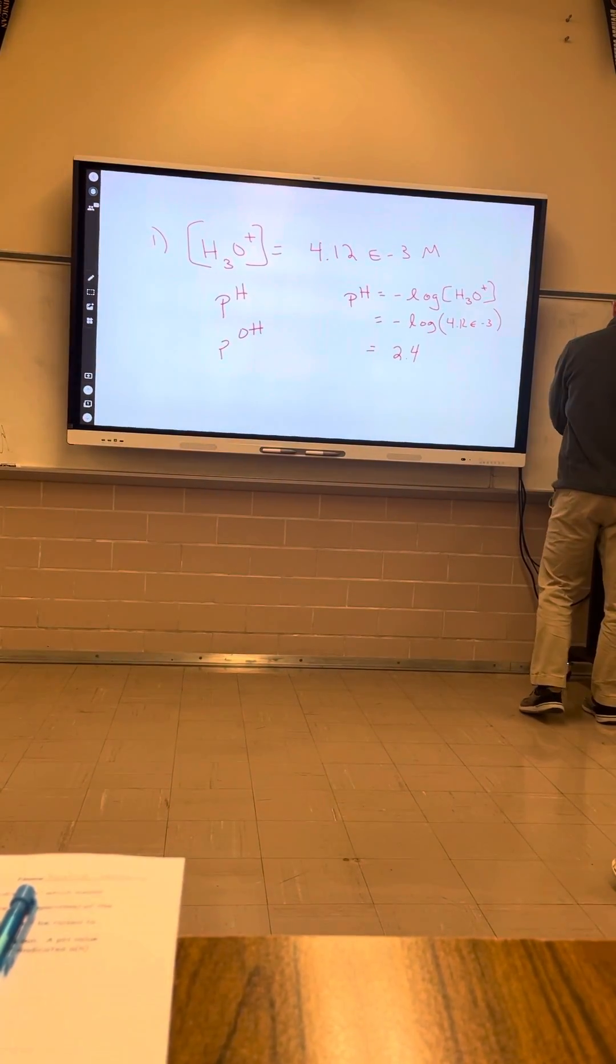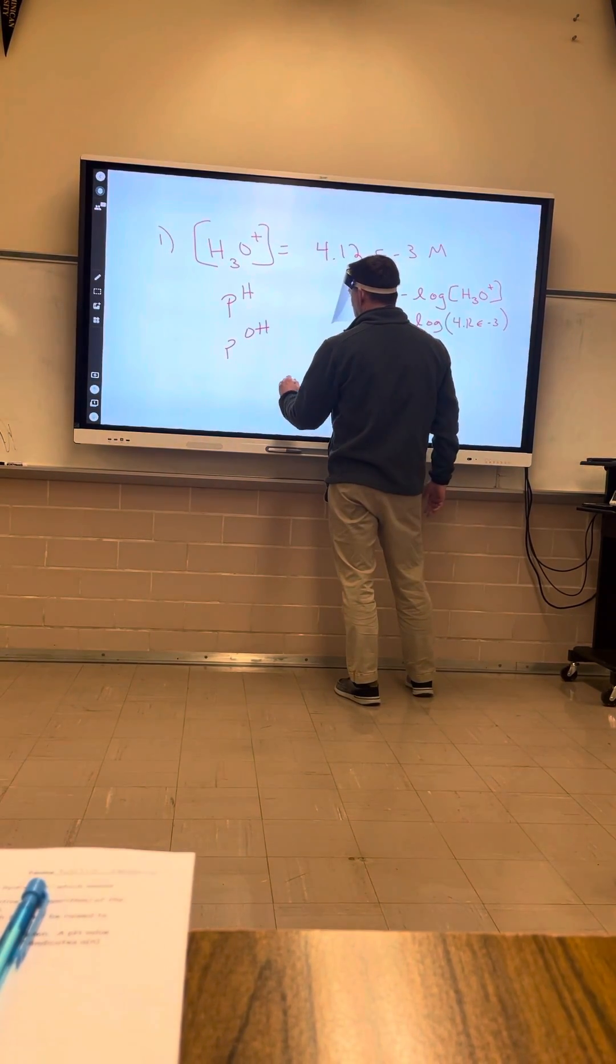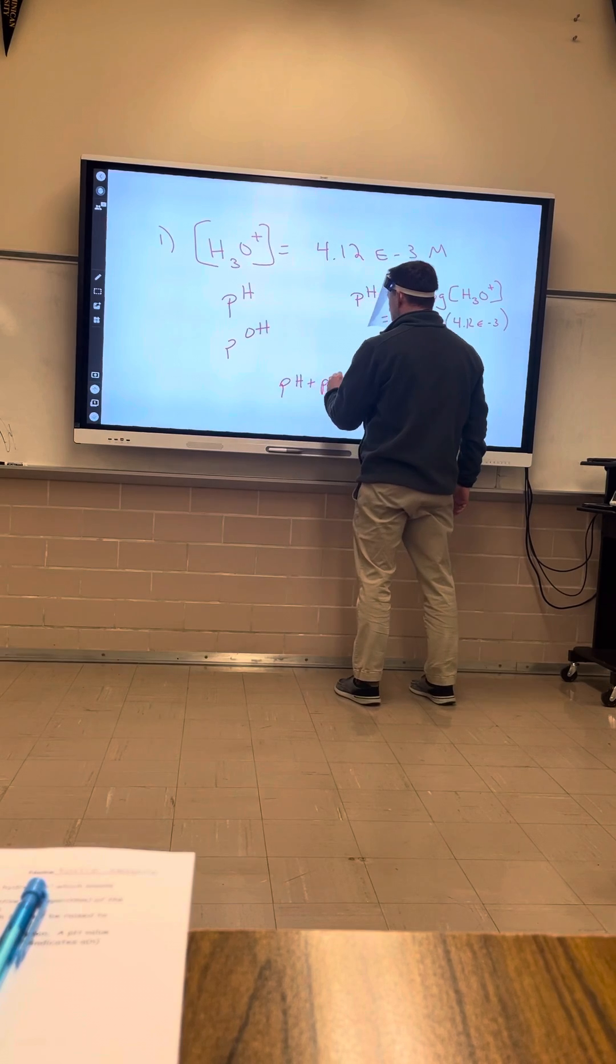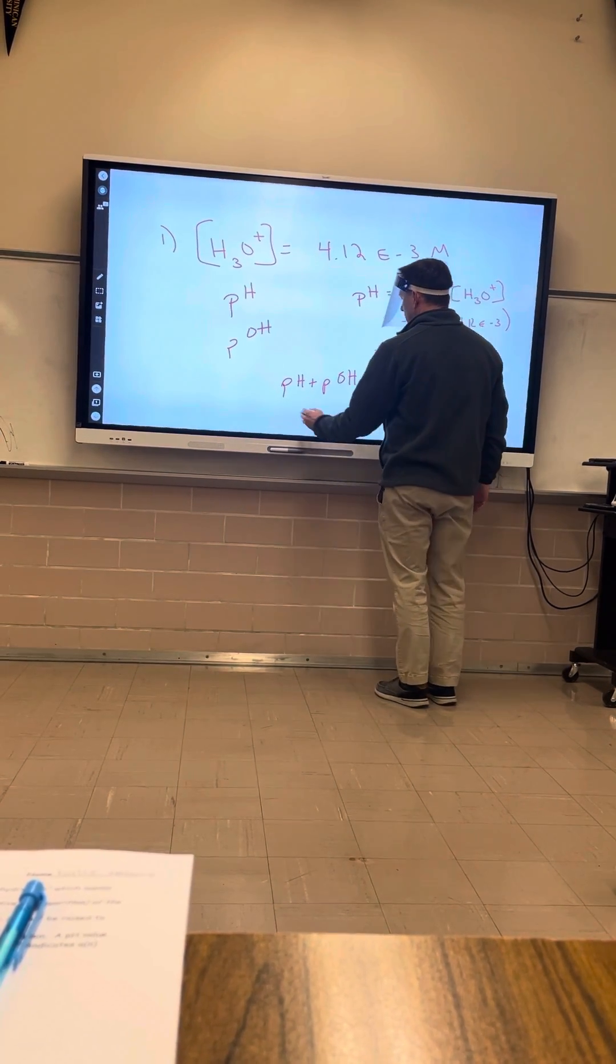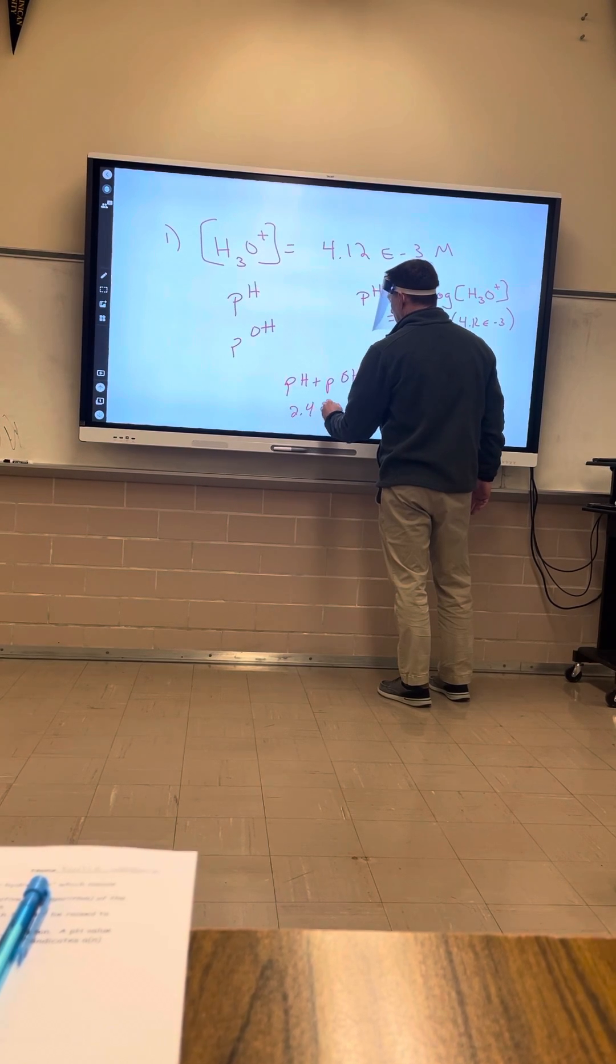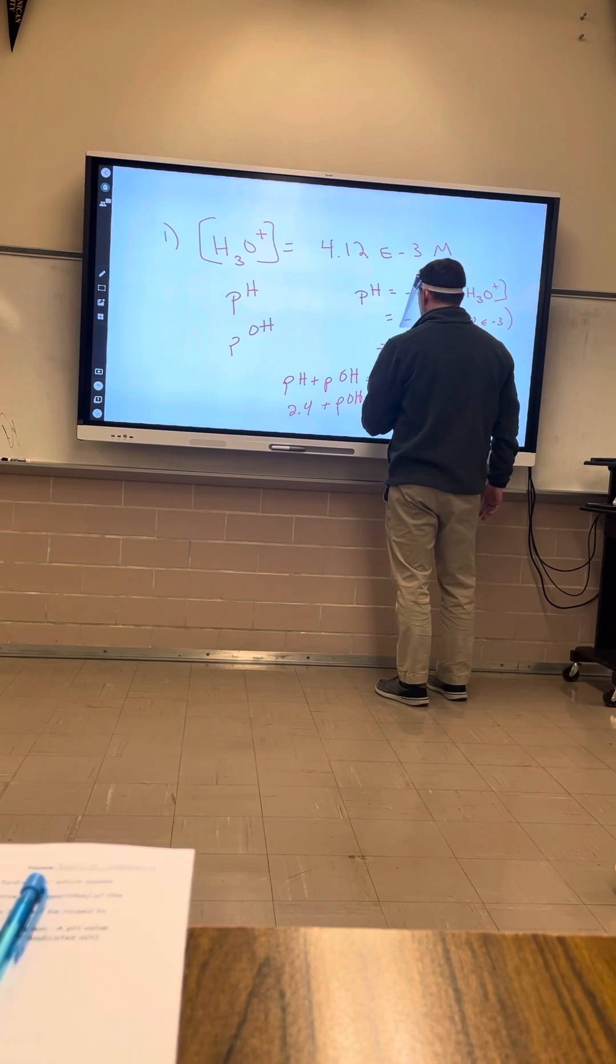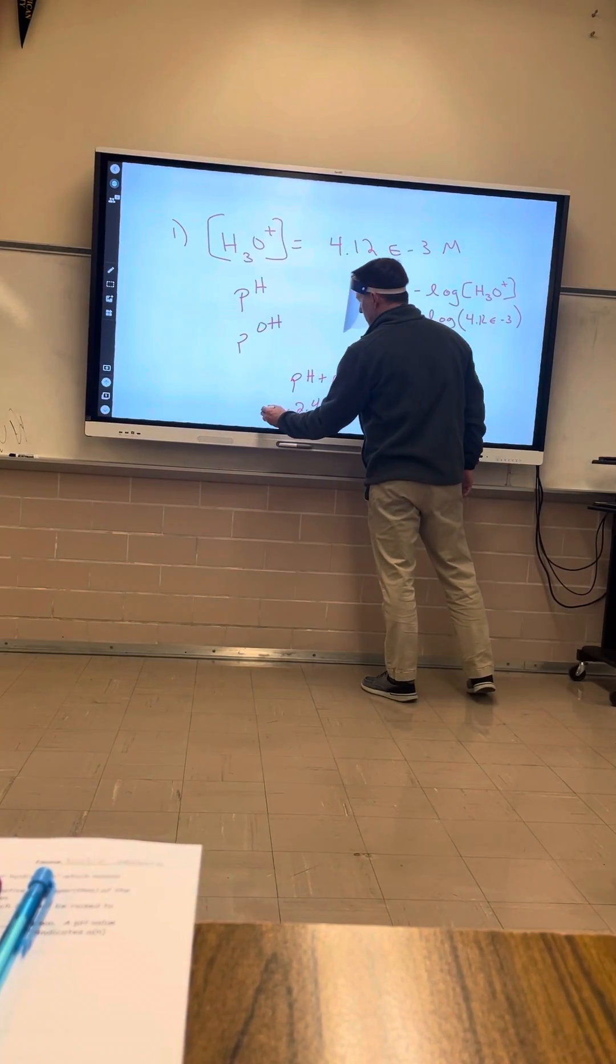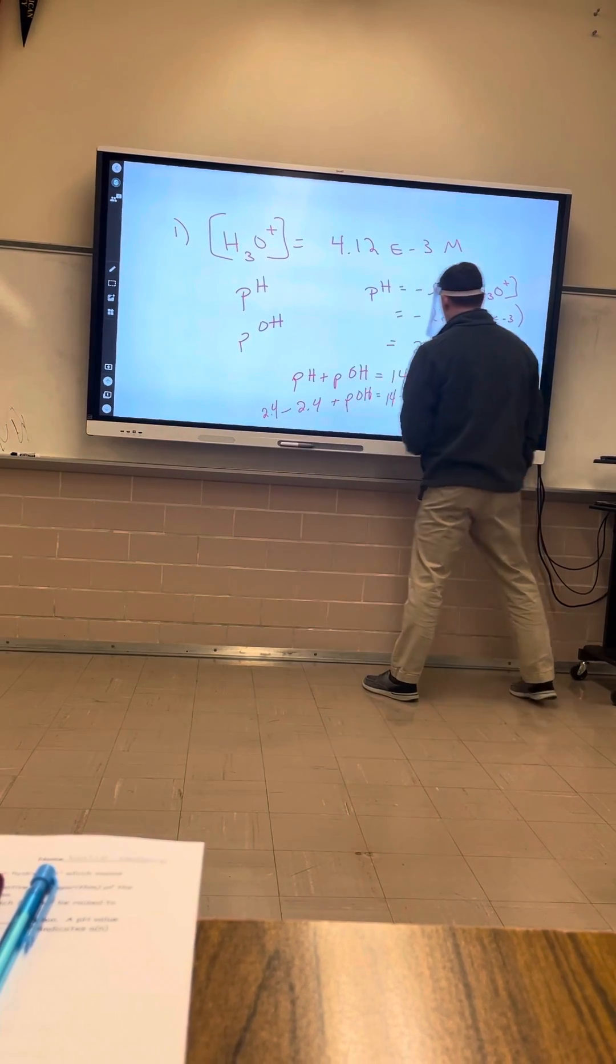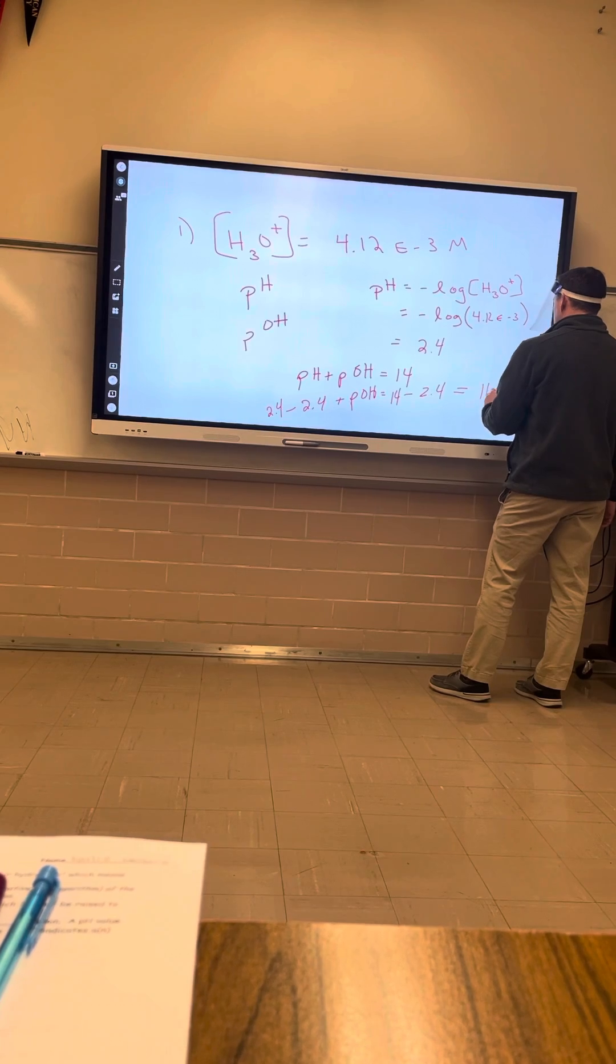Now, to find the POH, pH plus POH equals 14. So 2.4 plus POH equals 14. Subtract 2.4 from both sides, and we will get an answer of 11.6.